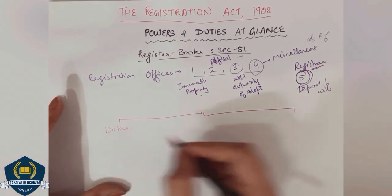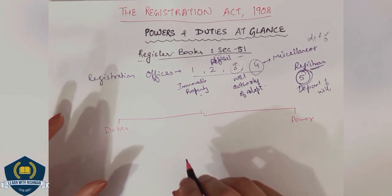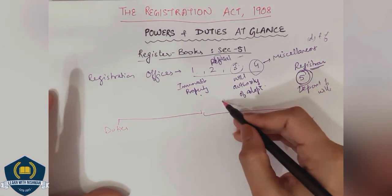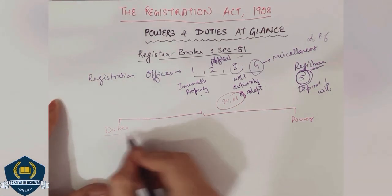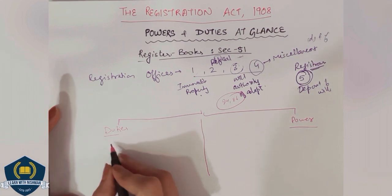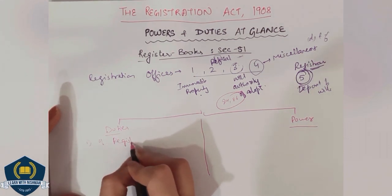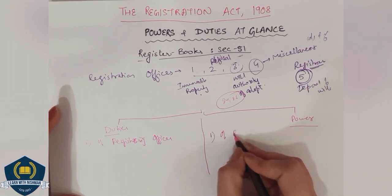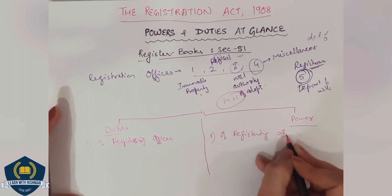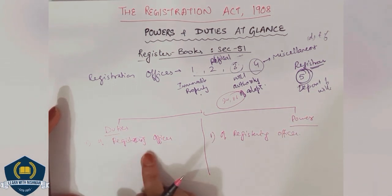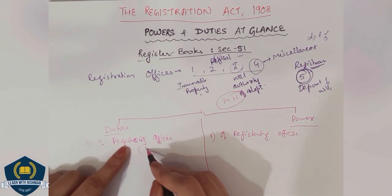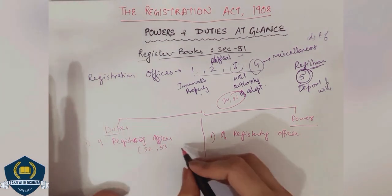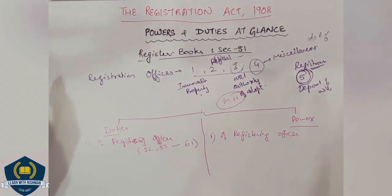One part will be duties and the other is powers. Basically, the introduction section for powers and duties is sections 84 and 86, which we will cover later on. I have divided duties and powers. First, the duties of the registering officer: sections 52, 53, 54, 55, then skip 56, then 57, 58, 59, 60, 61 — basically sections 52 to 61 are the duties of the registering officer.